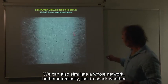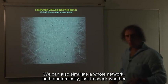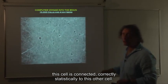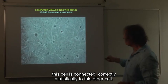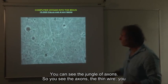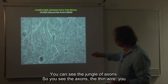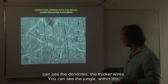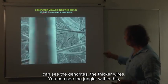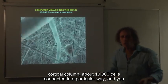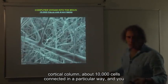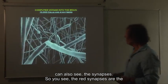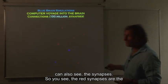We can also simulate a whole network, both anatomically, just to check whether this cell is connected correctly statistically to this other cell. You can see the jungle of axons. So you see the axons, the thin wire. You can see the dendrites, the thicker wires. You can see the jungle within this cortical column, about 10,000 cells connected in a particular way.